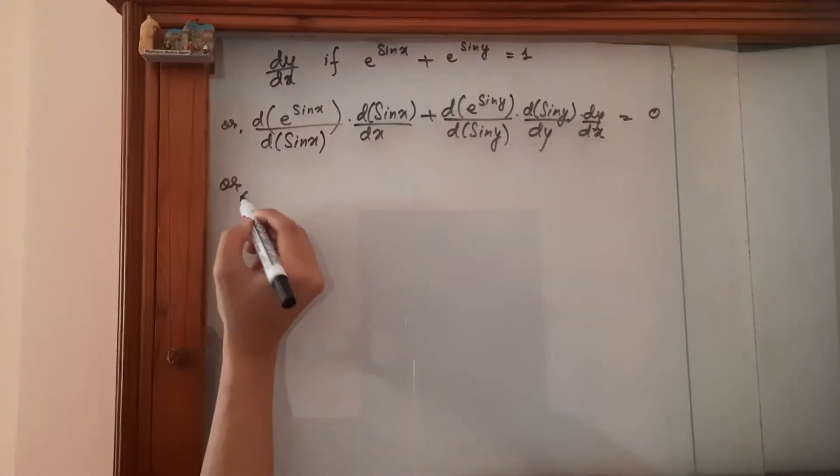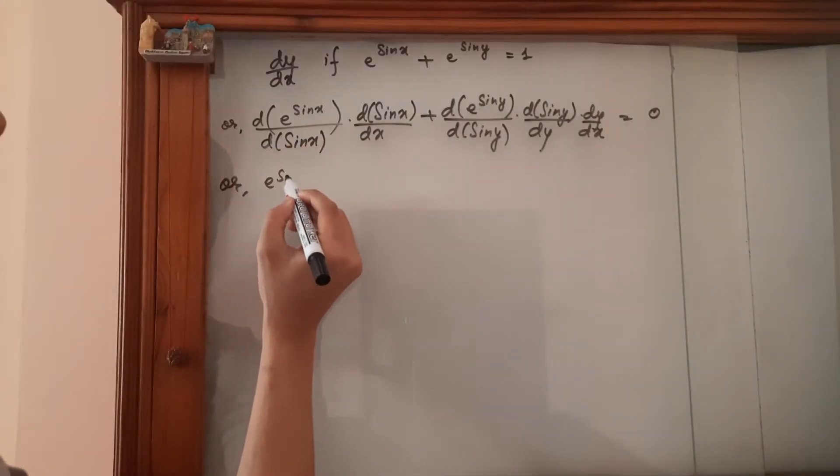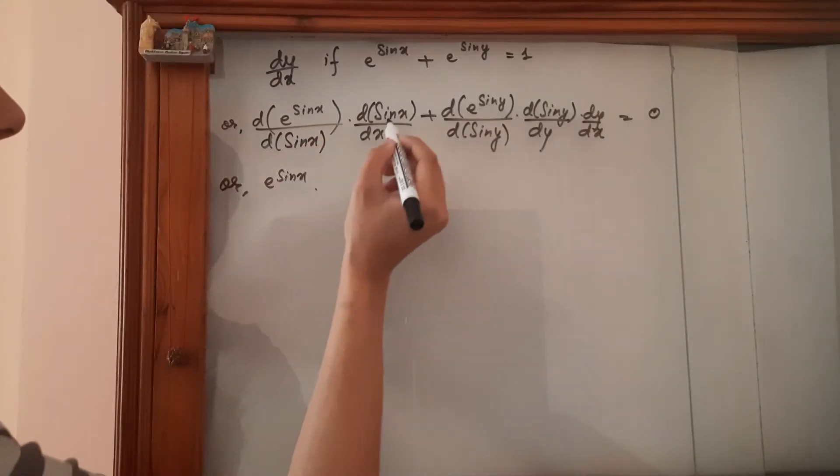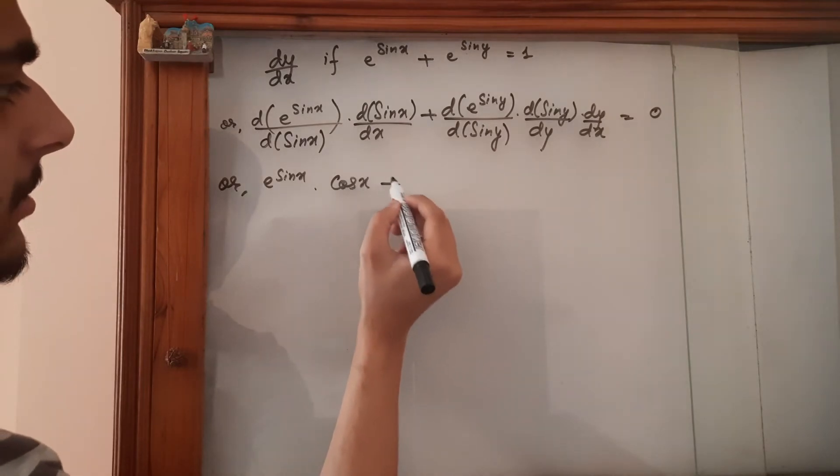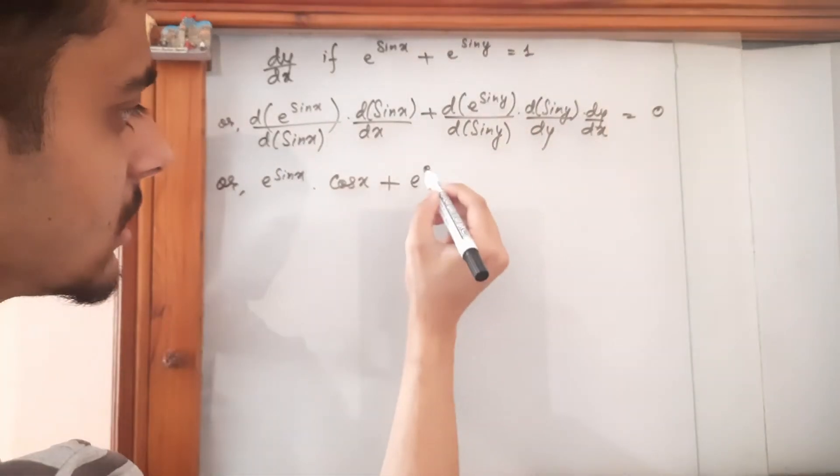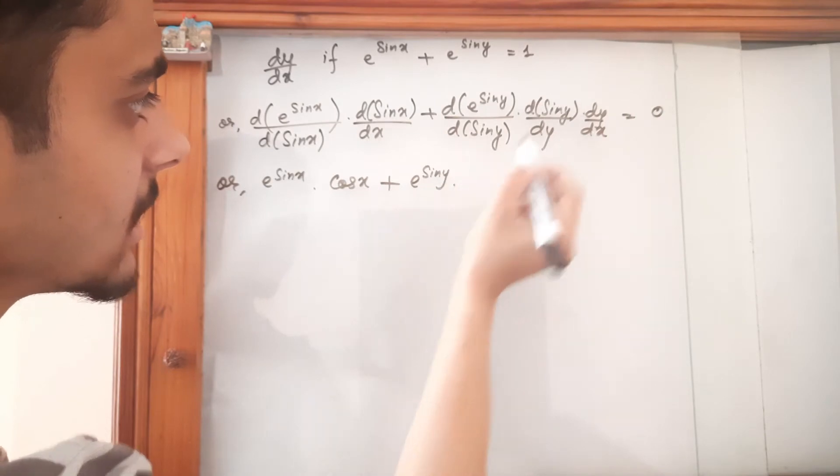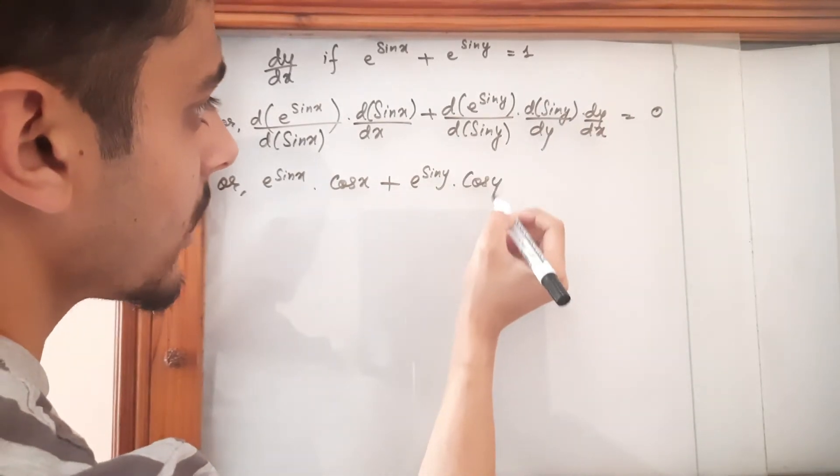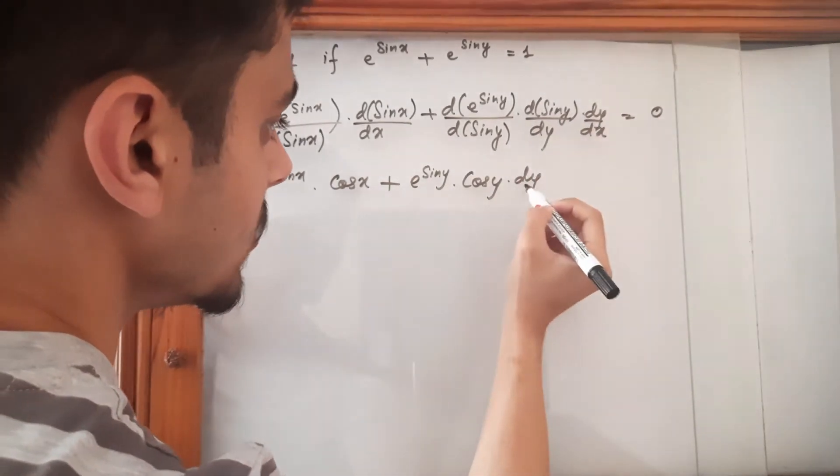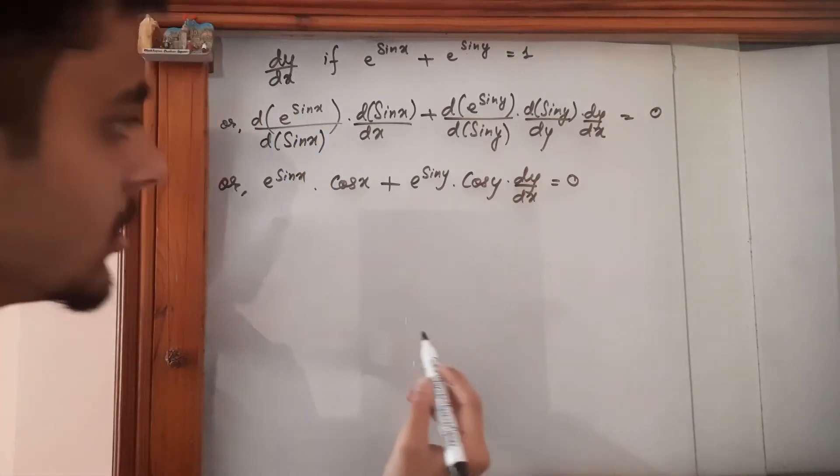So this is e to the power sine x as it is. This is cos x plus this is e to the power sine y. This is cos y and this is dy upon dx is equal to 0.